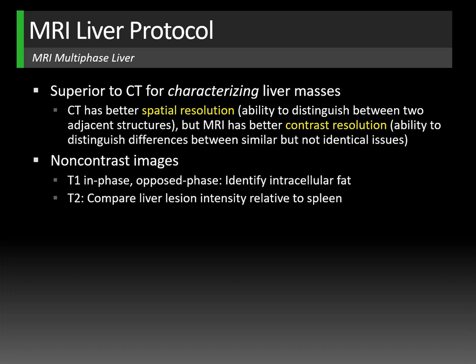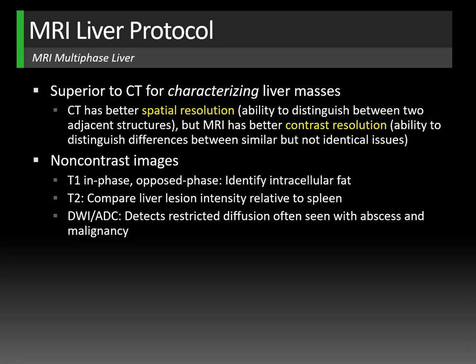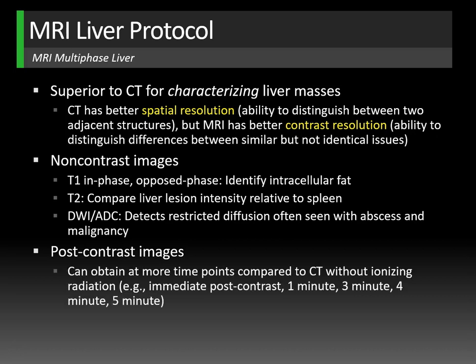T2-weighted images are helpful to compare liver lesion intensity relative to the spleen. Cysts and hemangiomas tend to be very bright relative to the spleen, whereas focal nodular hyperplasia and hepatocellular carcinoma are often iso-intense or slightly hypointense. Diffusion and ADC sequences are great at detecting restricted diffusion — helpful in characterizing abscesses, which often centrally restrict diffusion, compared to malignancy, which, if rim-enhancing, will often peripherally restrict diffusion due to dense cellularity. With MRI, we can also obtain subtraction images — post-contrast minus pre-contrast — to reveal absolute enhancement, helpful for intrinsically T1-bright lesions.